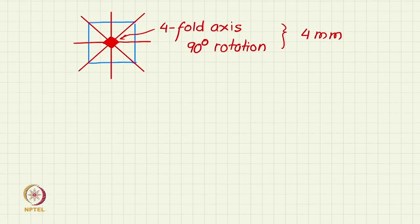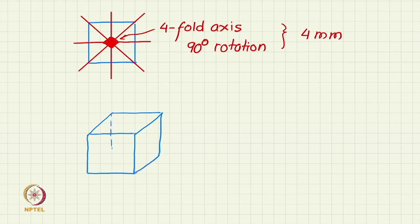Let us take now a 3-dimensional example. One of the most symmetric objects in 3D is a cube. Let us look at a cube. The cube is a highly symmetric object and we will explore its symmetry in great detail later.